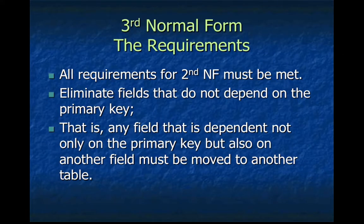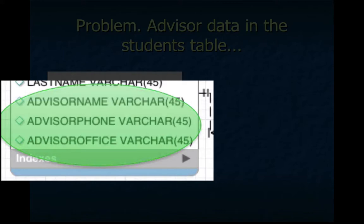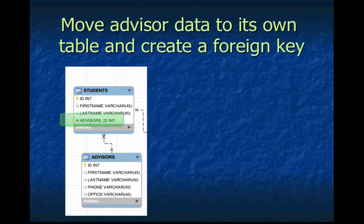Let's take a look at the third normal form, which goes beyond the second. We need to eliminate fields that do not depend on the primary key — any field that is dependent not only on the primary key but also on another field should be moved out to another table. The idea is that you'll probably be making more tables than you think you need. For example, in a student scheduling system where students have an advisor, the advisor name, phone, and office should not be listed inside the student's table. Instead, we create an advisor ID in the student table and give the advisor their own separate table.